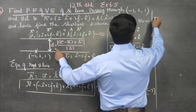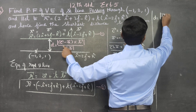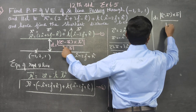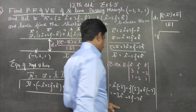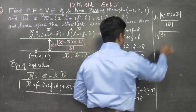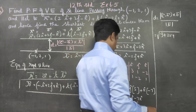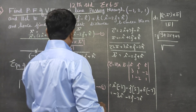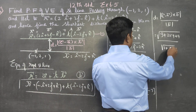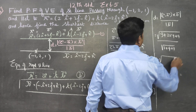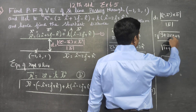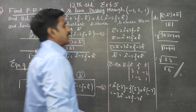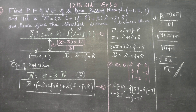The formula is: distance equals magnitude of c minus a cross b divided by magnitude of b vector. Numerator: square root of 9 plus 25 plus 49. Denominator: square root of 1 plus 4 plus 1. This gives the final answer for the distance between the two parallel lines.